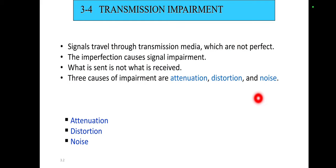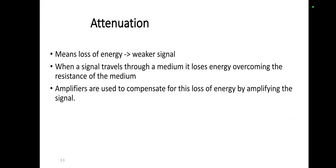The first cause of transmission impairment is attenuation, which means loss of energy — the signal becomes weaker. When a signal travels through the medium, it loses energy due to the resistance of the medium, meaning the original signal and the signal after traveling through the medium are not the same.